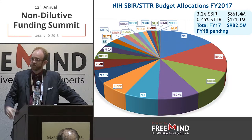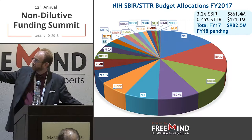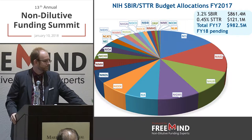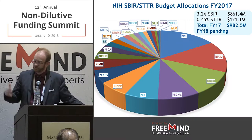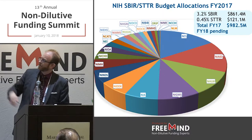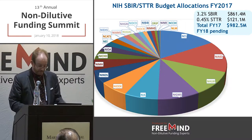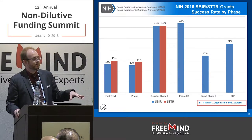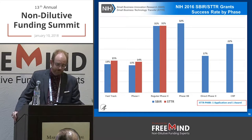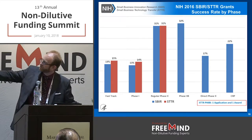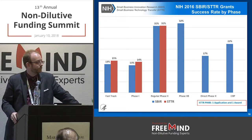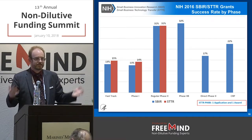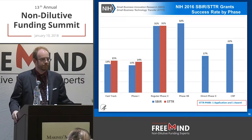Just because an institute is medium or small on the chart doesn't necessarily mean it's harder to get an award there. National Cancer Institute, with all the money, gets the largest volume of applications, and their success rates are typically lower than other institutes because of that volume. Some of our institutes have pretty decent success rates. In fiscal 2016, Phase 1 success rates were 13–16% — and this holds roughly true whether you're applying to NIH, NSF, or DOD. It's roughly 15%, give or take, not by design — that's just how the program tends to work out.